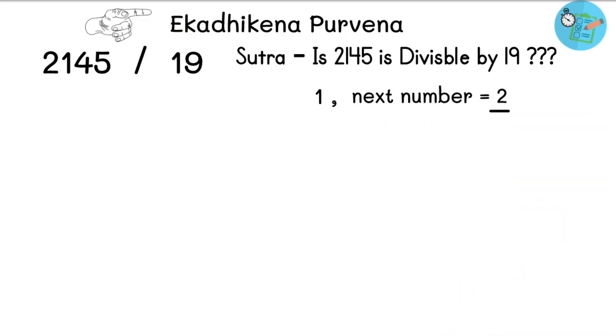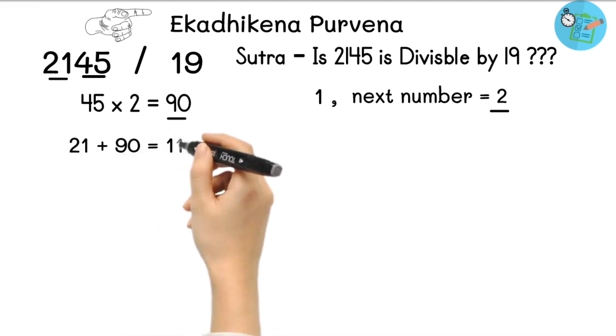Now in the next step, we will multiply these 2 with the last 2 digits of 2145. So we will get 45 multiplied by 2 equals 90. Now take this 90 in the next step and add first 2 digits of 2145. So 21 plus 90 equals 111.